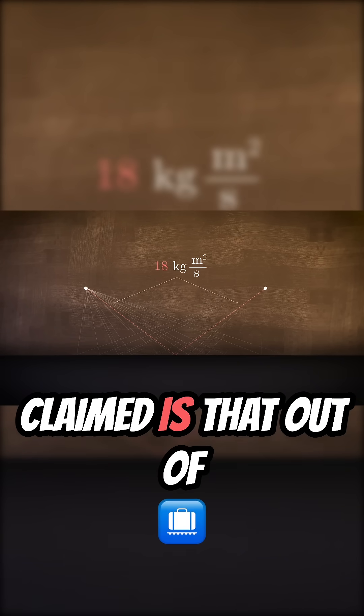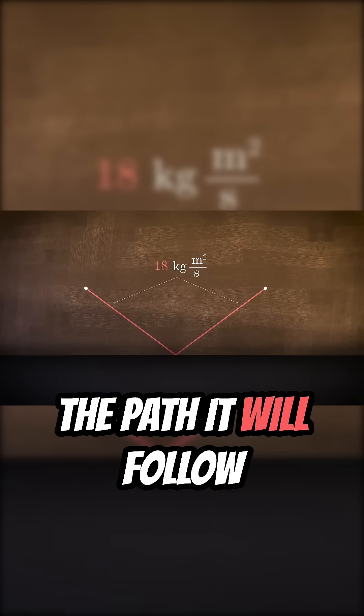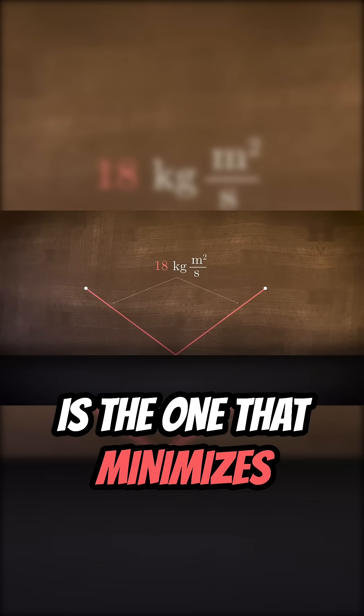Now, what Maupertuis claimed is that out of all possible trajectories where the ball bounces off the wall, the path it will follow is the one that minimizes the action.